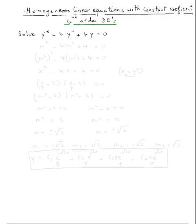So again, the first thing we do is the auxiliary equation, which is m⁴ minus four m² plus four equals zero. So all we need to do is solve the auxiliary equation.